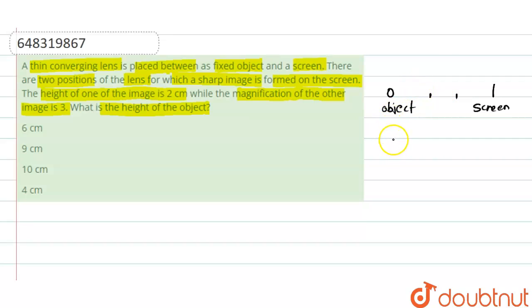For the first case when we are getting a sharp image, the height of the image h' is found to be 2 centimeters. For the second case, we have the magnification of that image equal to 3. Now we want to calculate the height of the object.